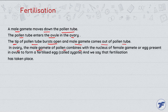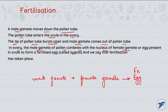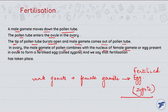In the ovary, the male gamete of a pollen combines with the nucleus of a female gamete — male gamete plus female gamete — to form a fertilized egg. We say that fertilization has taken place.